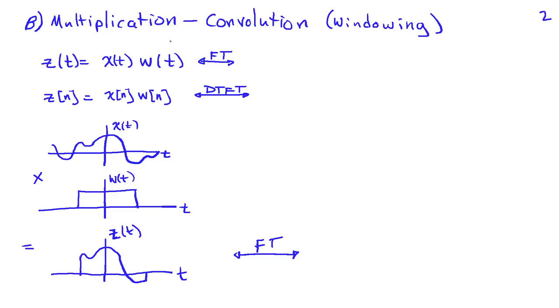Another property that's particularly useful is the so-called multiplication convolution property, or it's sometimes referred to as windowing. Here, we're going to define a signal z(t), which is the product of x(t) and some window w(t), or in discrete time, z[n] is x[n] times w[n]. If I sketch this out, it's like I have some signal x(t), which goes on indefinitely, and what I'm going to do is only consider some finite time interval of this signal, say, that represented by this window w(t). So then I'm going to analyze the signal z(t), which just represents the, then I'm only looking at z(t) in this interval.